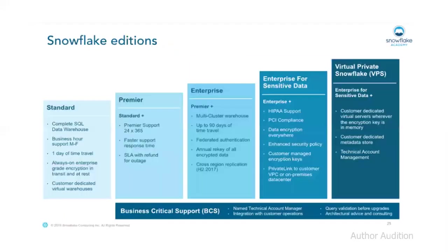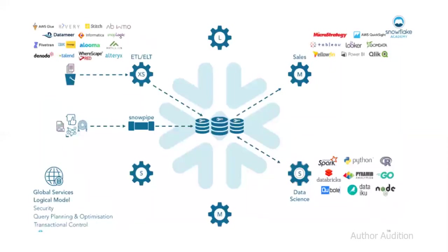Snowflake editions include Standard, Premier, Enterprise, and Enterprise for Sensitive Data — features vary by version. When creating your account, Snowflake can host it on AWS, Azure, or GCP. You can also choose a Snowflake VPC — a virtual private network maintained by Snowflake itself.